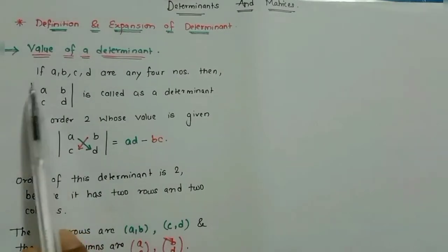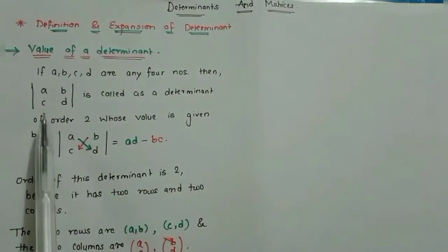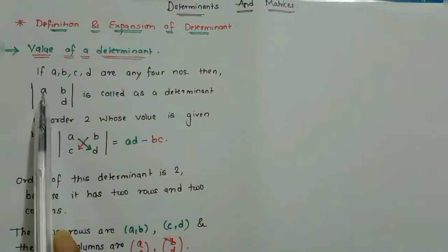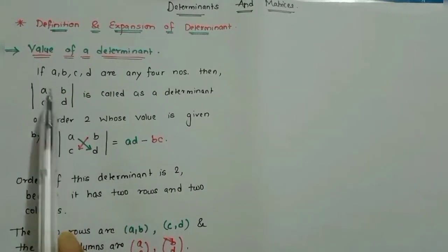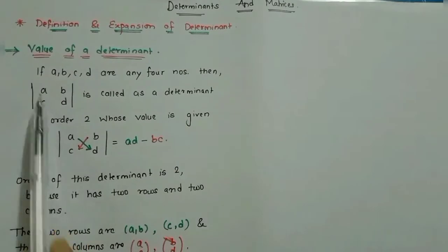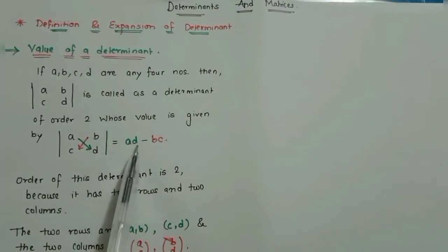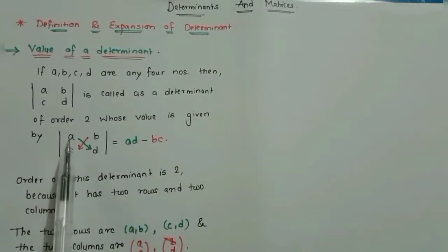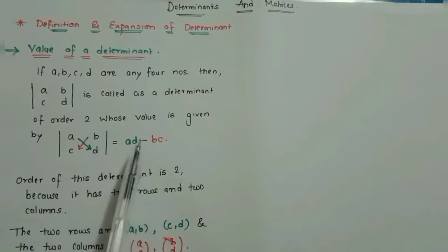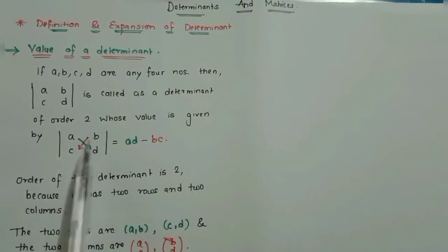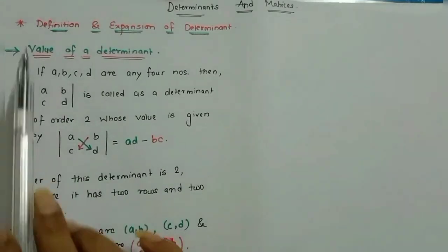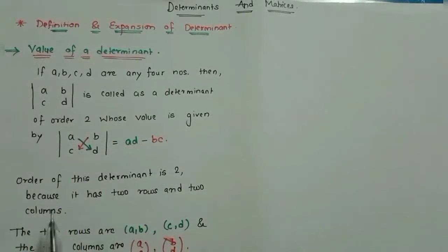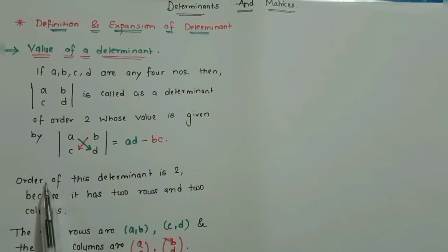To calculate the value of a determinant, we do cross multiplication from left to right. We multiply a into d — that is ad — then put a minus sign, then multiply b into c — that is bc. So the value of the determinant is ad minus bc. This is how we calculate the value of a 2×2 determinant.